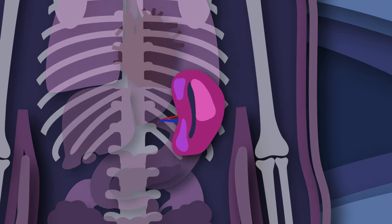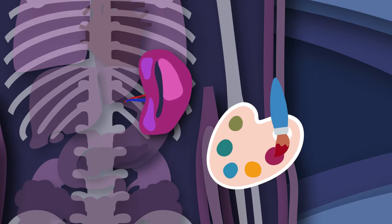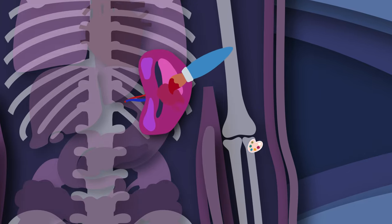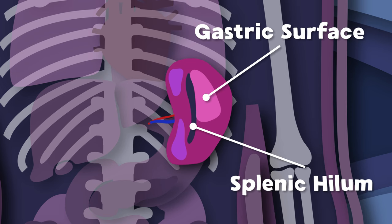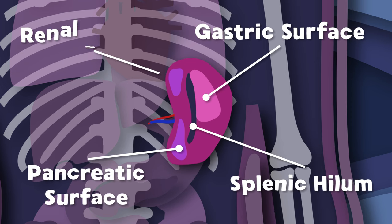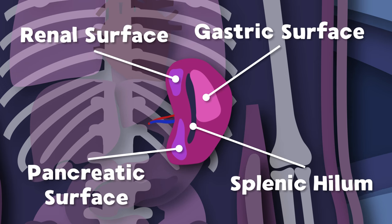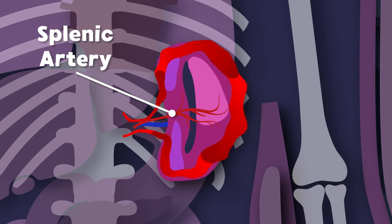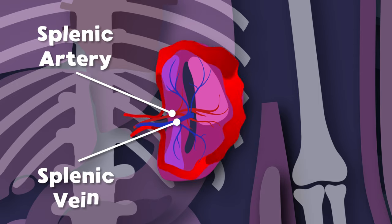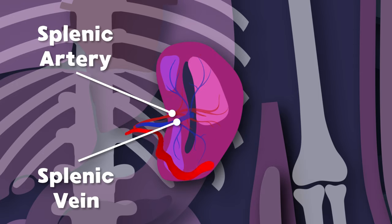The spleen's parts I will teach you this now while you look at the splenic work of art. Here you see the splenic hilum and the gastric surface. There's the pancreatic and renal surface. Now repeat this: the splenic artery supplies oxygenated blood to the spleen, and the splenic vein drains the blood from the spleen.